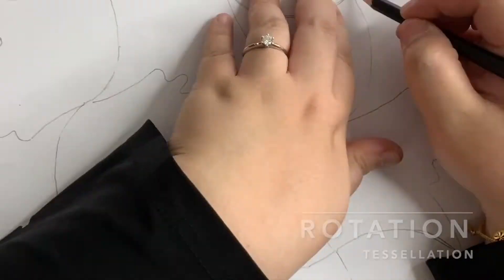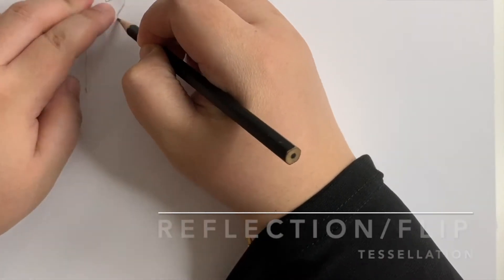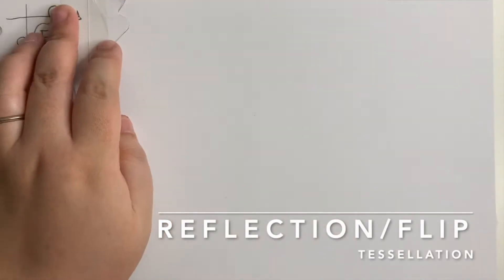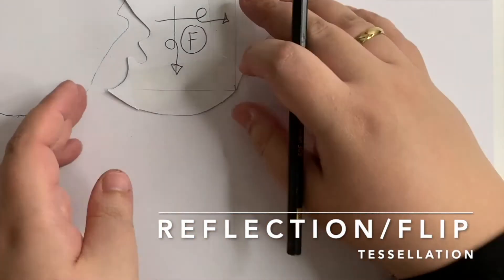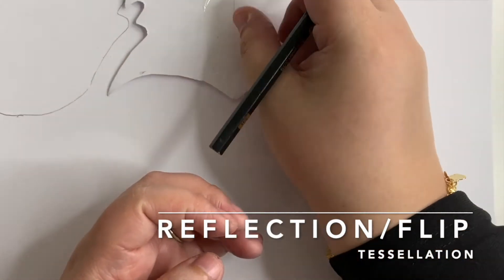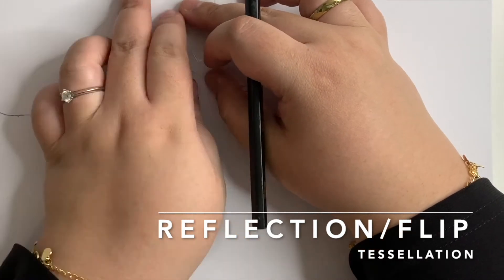Next, we are going to do the flip tessellation. Take the flip template, trace out your first shape. Slide your template, flip it until it fits the traced shape and do the tracing.